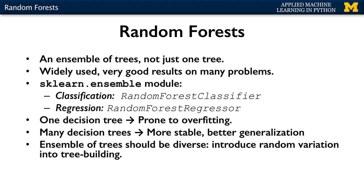One disadvantage of using a single decision tree was that decision trees tend to be prone to overfitting the training data. A random forest creates lots of individual decision trees on a training set, often on the order of tens or hundreds of trees. Each of the individual trees should do reasonably well at predicting the target values, but should also be constructed to be different in some way from the other trees in the forest.